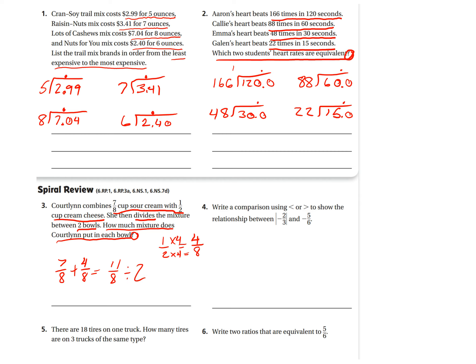Okay. So, 11/8 divided by 2. And now I can just do my copy. And then 2 is the same thing as 2 over 1. So, I find the reciprocal of that, which would be 1 over 2. And then I can multiply. So, 11/16 cups in each bowl.